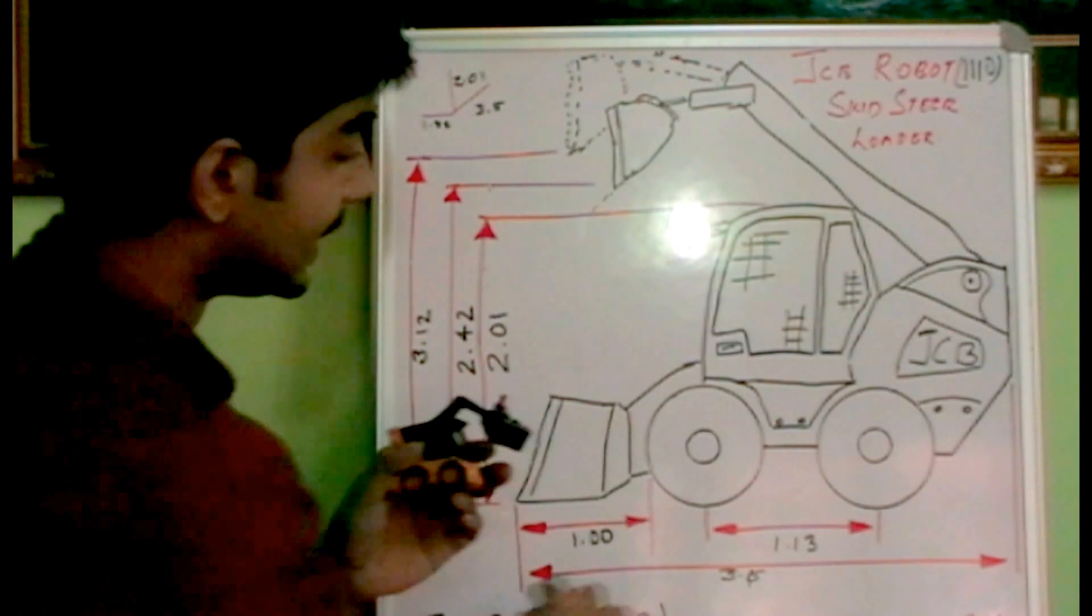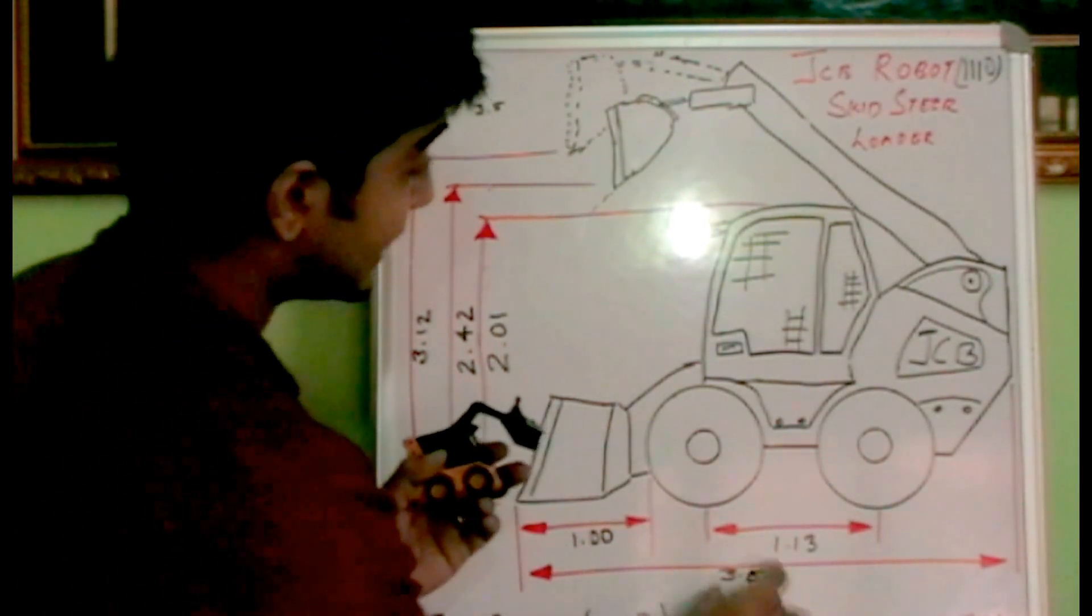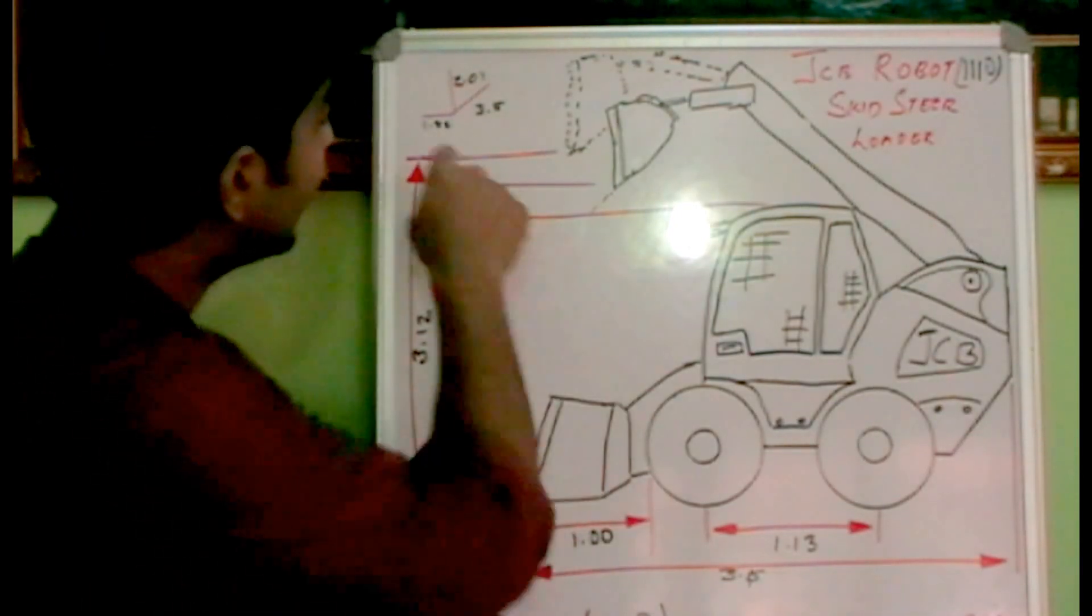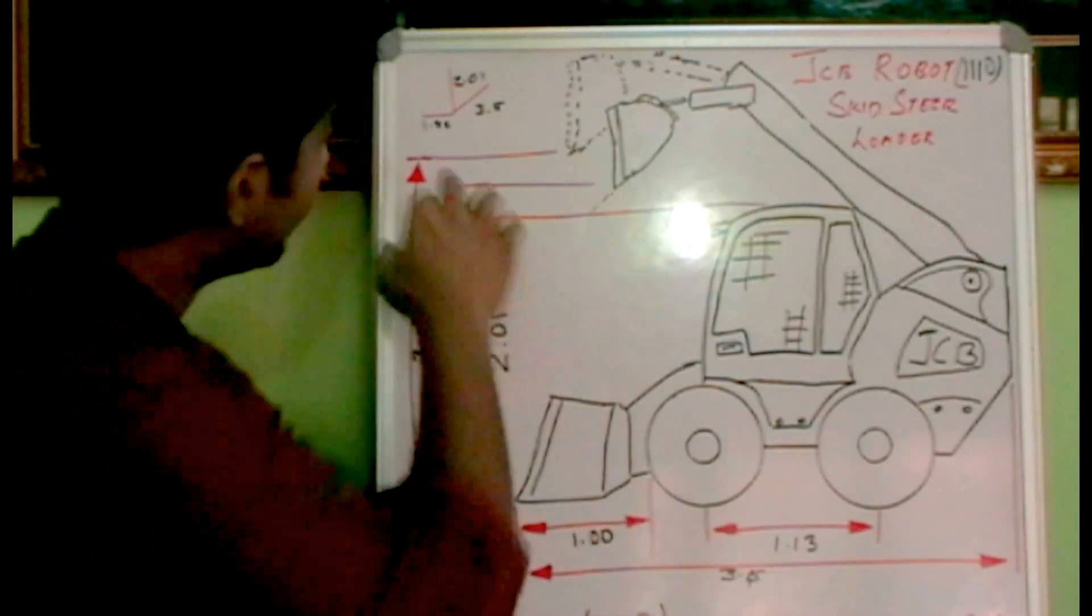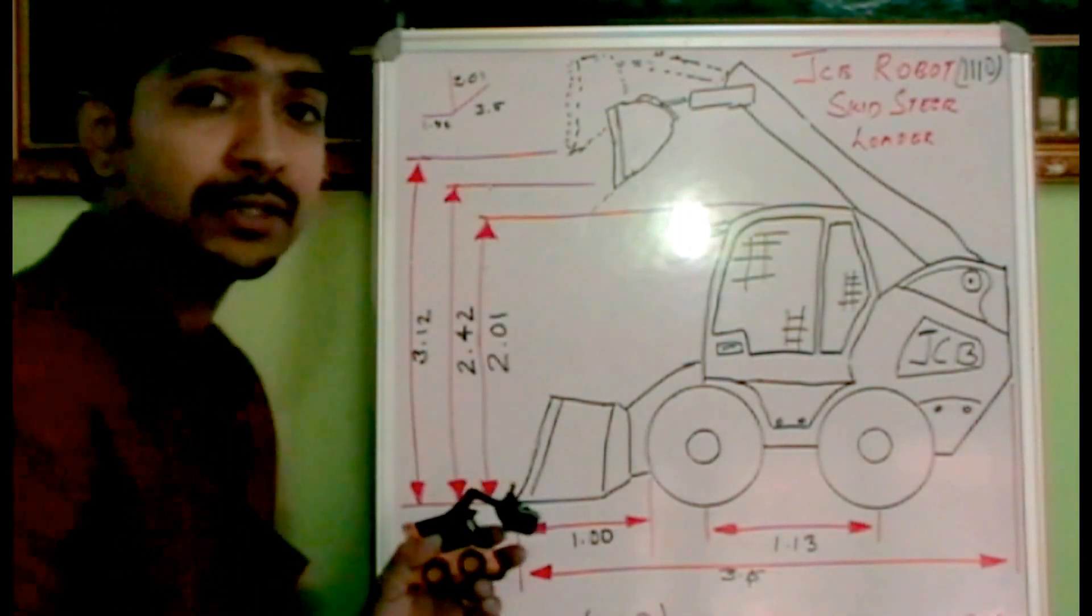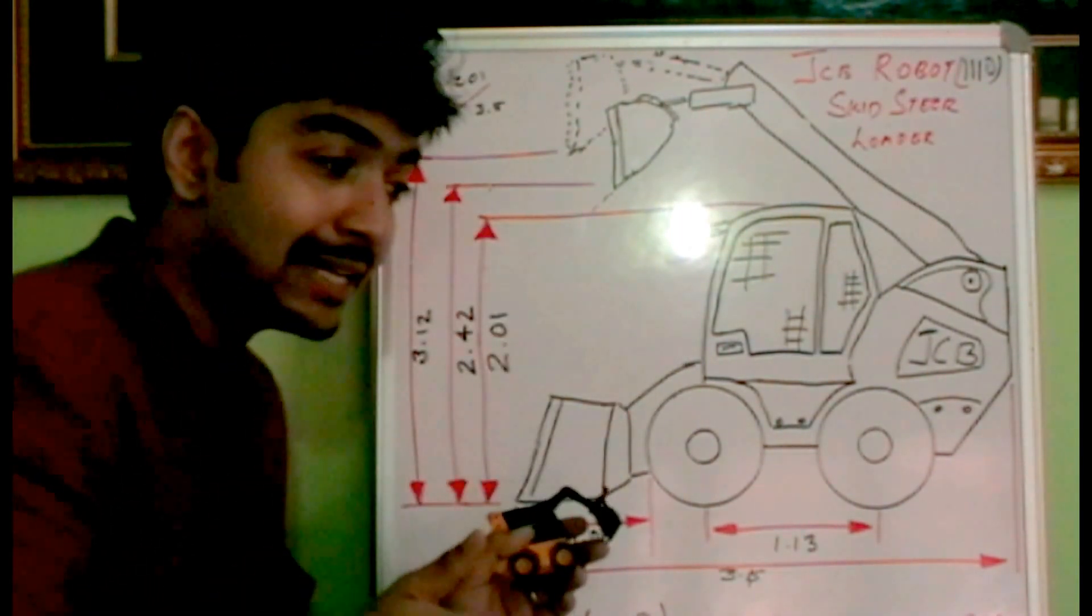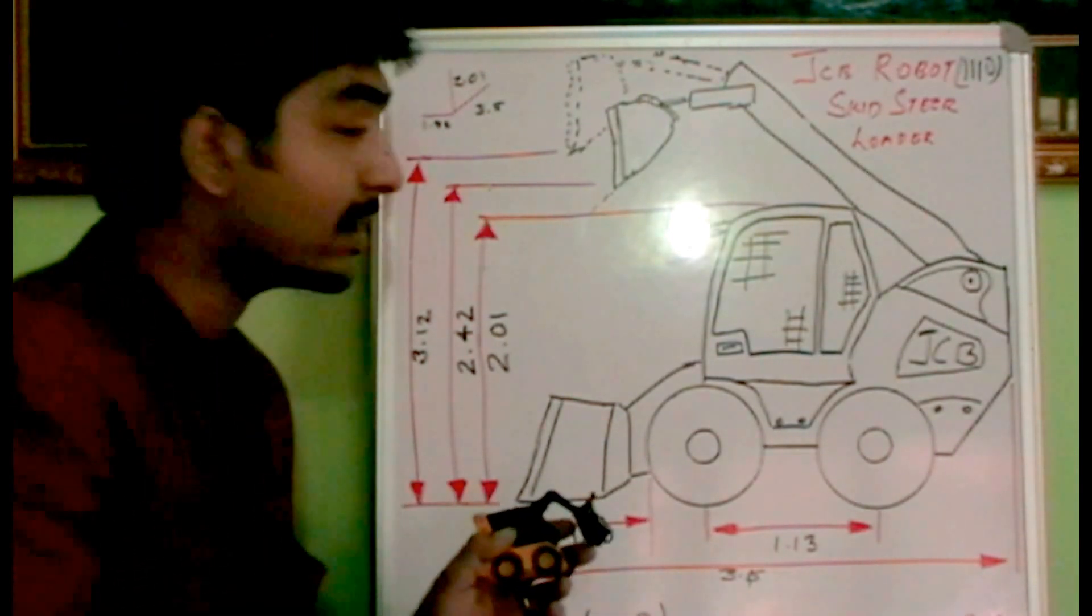And also the length. It is 3.5 meters length. The top of the cabin, the length is about 2.1 meter. And the breadth, that is the loader length, is about 1.88 meters. So this is a very compact machine which can work inside the limited space of an industry for material handling.